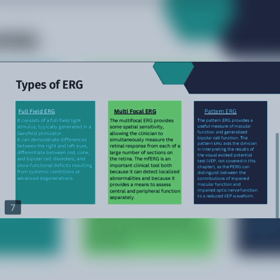There are three types of ERG. Full-field ERG consists of a full-field light stimulus, typically generated in the Ganzfeld stimulator. It can demonstrate differences between the right and left eyes, differentiate between rod, cone, and bipolar cell disorders, and show functional defects resulting from systemic conditions or advanced degeneration.